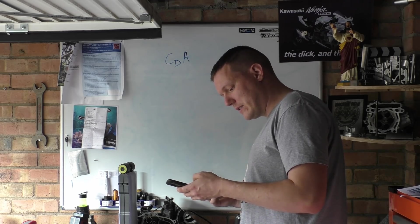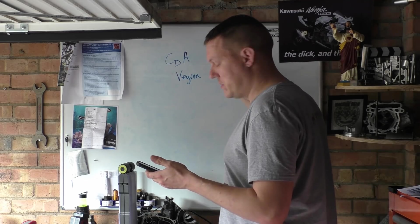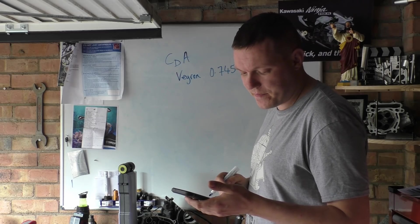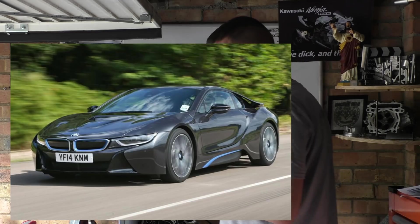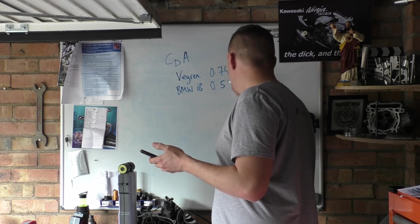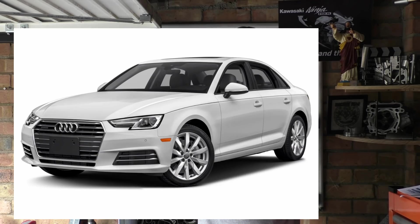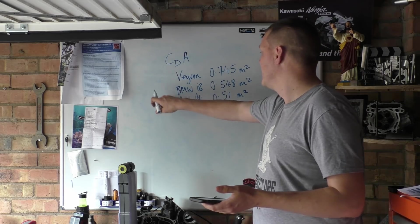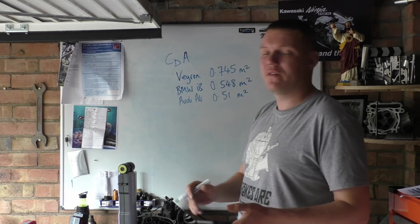When you look at the CDA, you've got a Bugatti Veyron that comes in at 0.745 meters squared, a BMW i8 that has an area of 0.548, and an Audi A4 that comes in at 0.51. You think, all right, fair enough. A Veyron is like a tank—although yes they've done a lot of aerodynamics, it's over its surface area, you get this number.